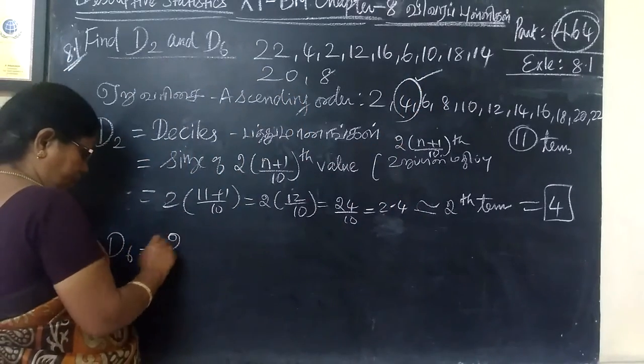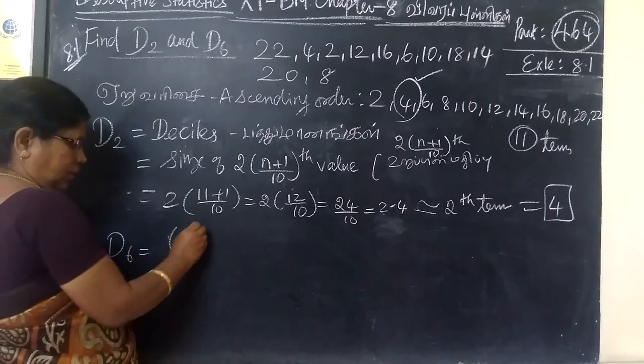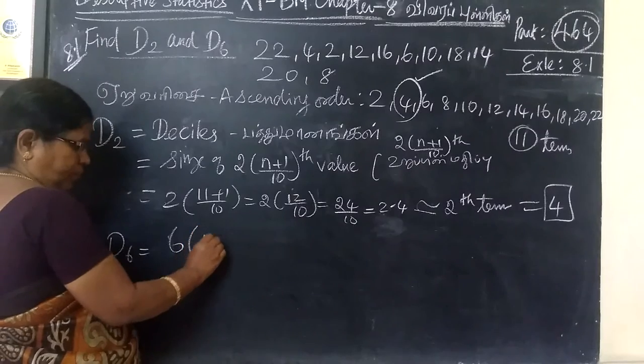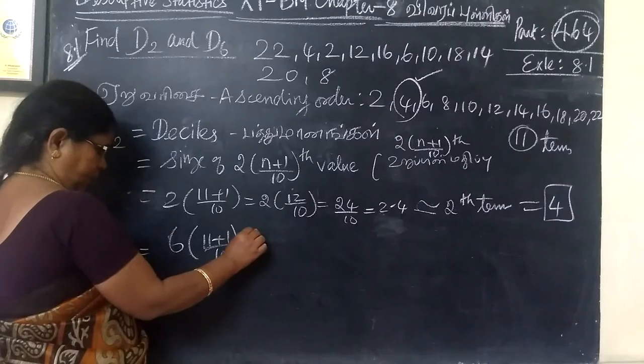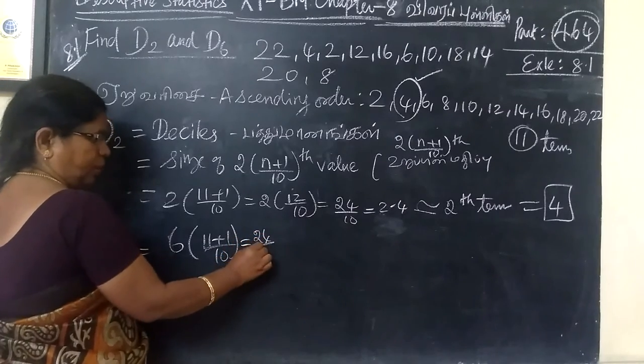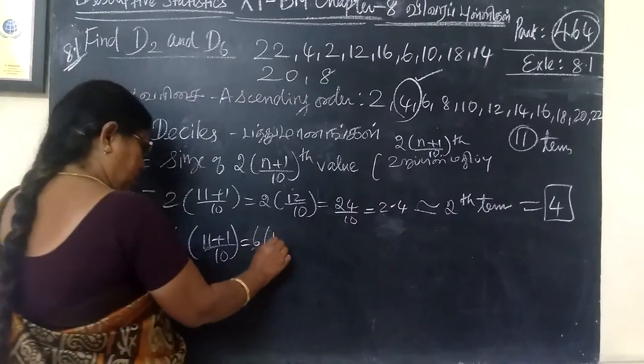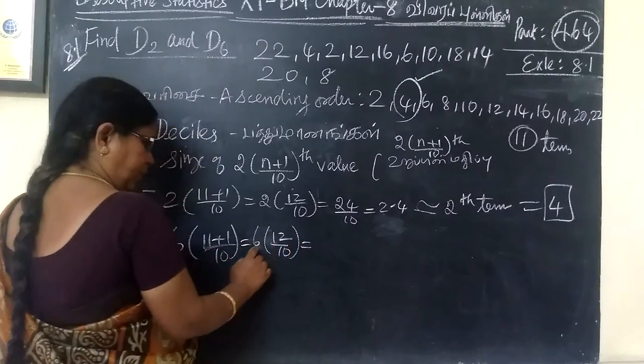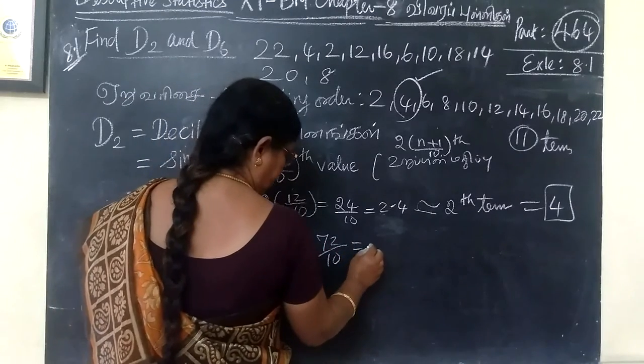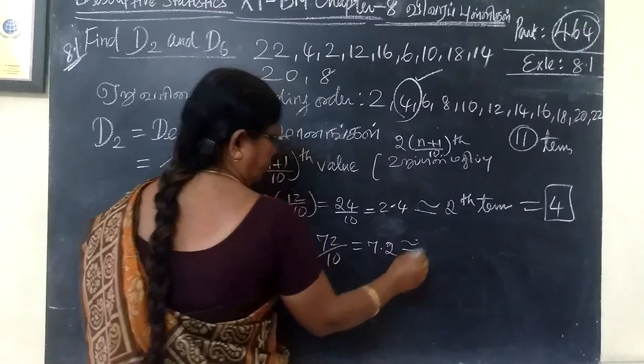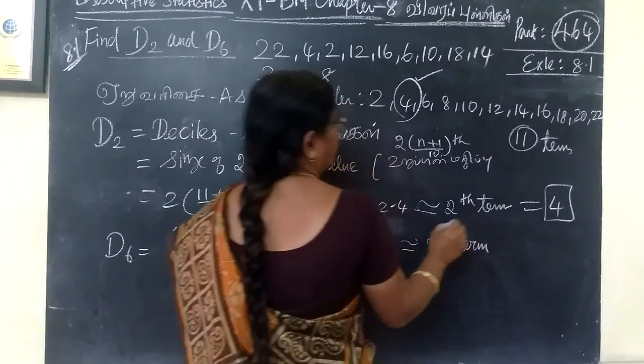D6. The suffix is here, 6. Number of terms, no change. 12, 6, 72 by 10. 12 by 10, 72 by 10, equal to 7.2. Approximately we get value 7th term.